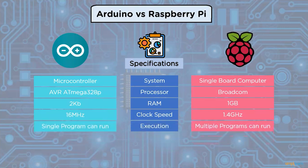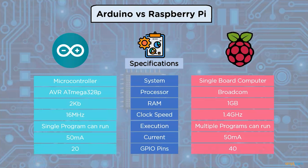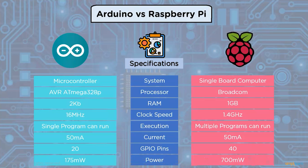Arduino can execute only a single program at a time, whereas Raspberry Pi can run multiple programs simultaneously. Current draw is 5 mA in both Arduino and Raspberry Pi. GPIO pins: Arduino has 20 and Raspberry Pi has 40. Power consumption is 175 milliwatts in Arduino and 700 milliwatts in Raspberry Pi.